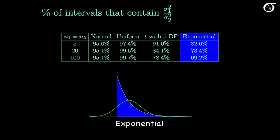Let's look at one more distribution: the exponential distribution. The estimated coverage probabilities are much less than the stated 95%, starting around 82.6% for sample sizes of 5 and getting worse as sample sizes increase. The exponential distribution has a sharper peak and more area far out in the tail compared to the normal distribution. Sampling from the exponential distribution results in more extreme values of the ratio of sample variances, so methods based on the normal distribution will tend to underestimate the variability in the sampling distribution of the ratio of sample variances. The resulting intervals will tend to be too narrow, and the coverage probabilities will be much less than the stated 95%.